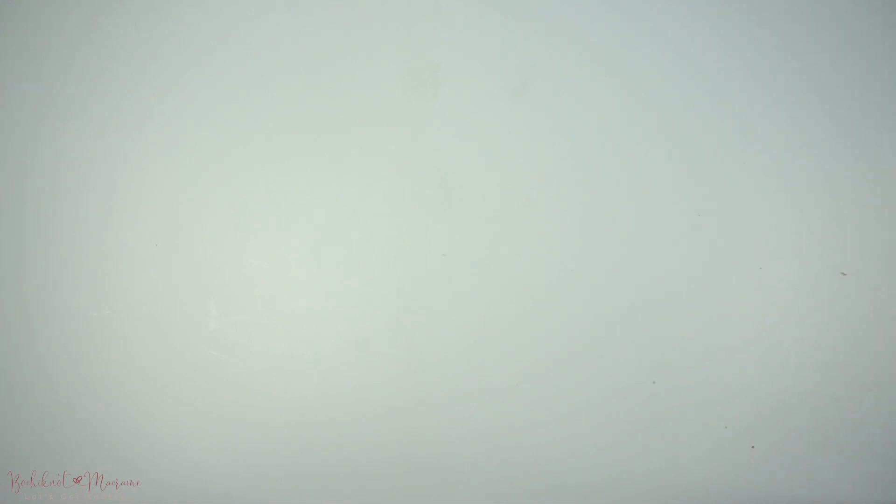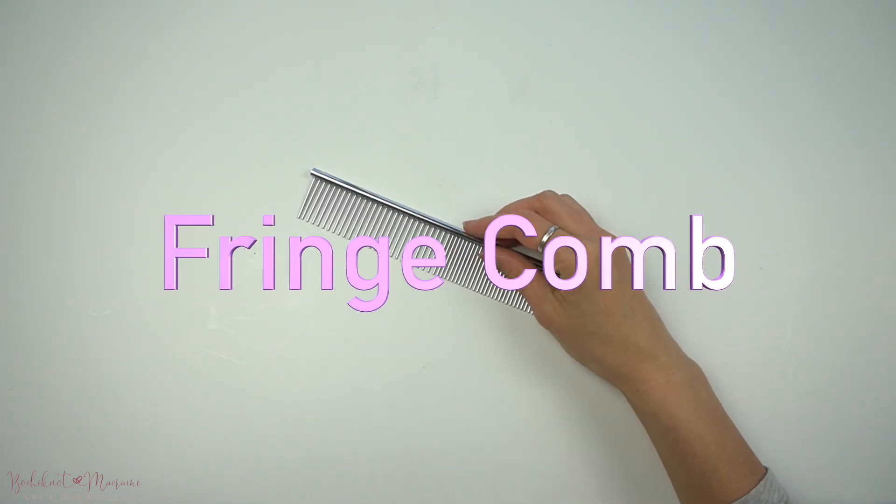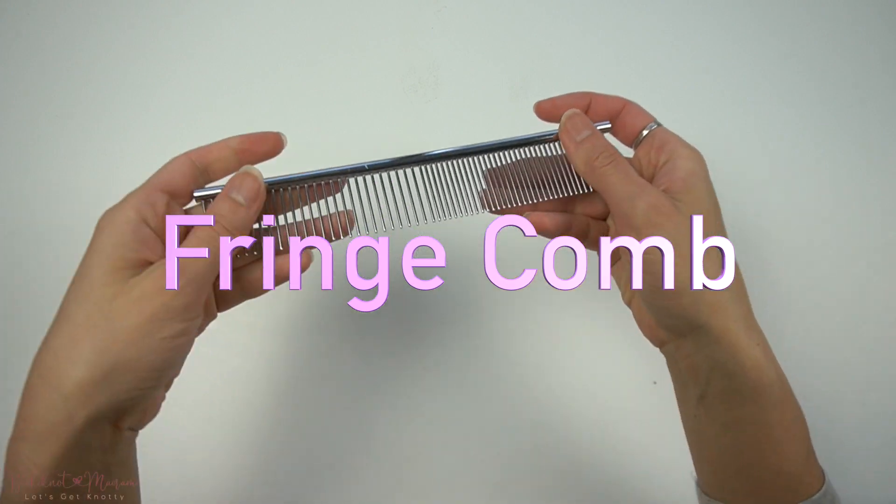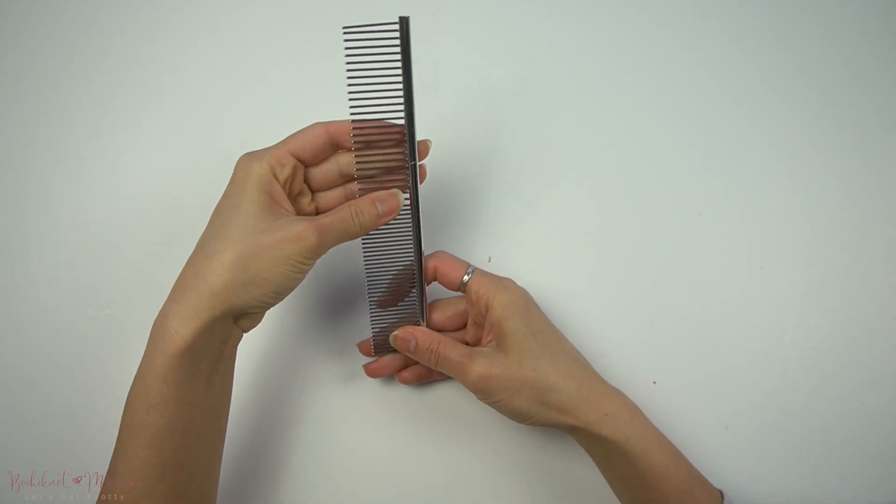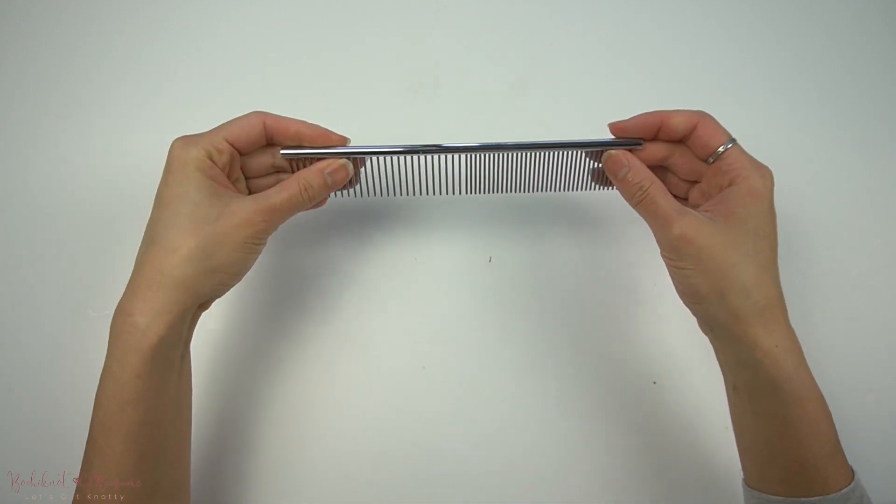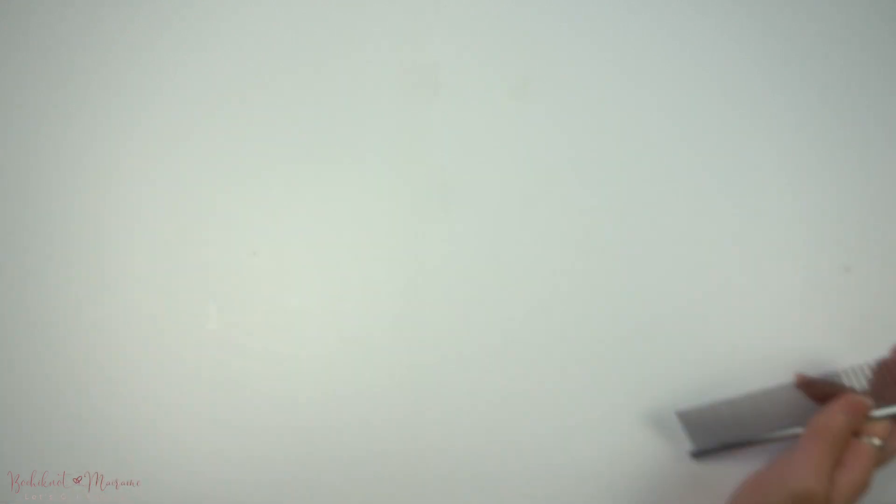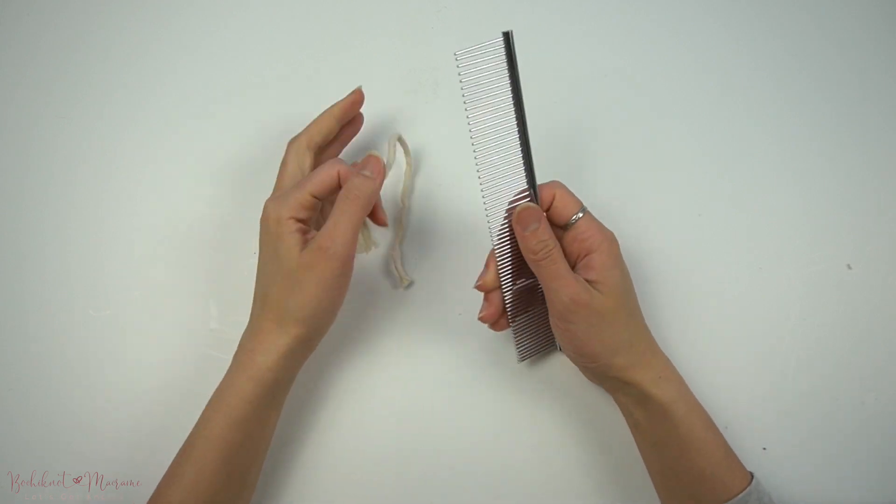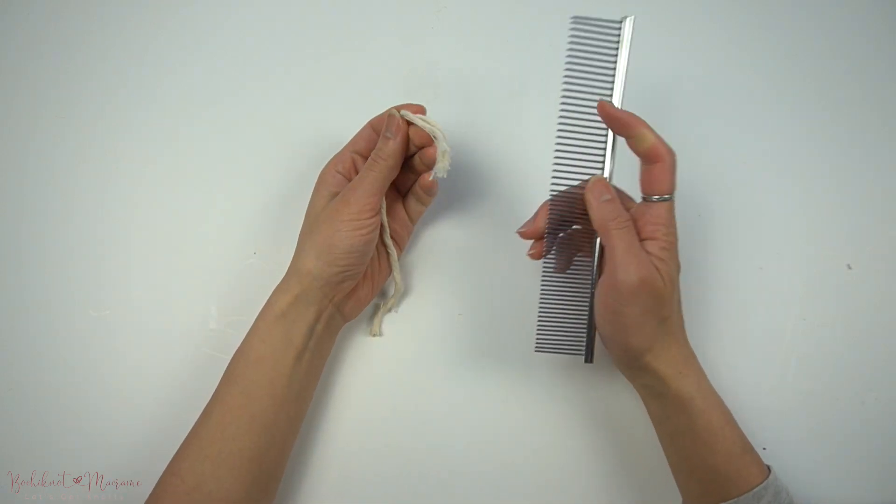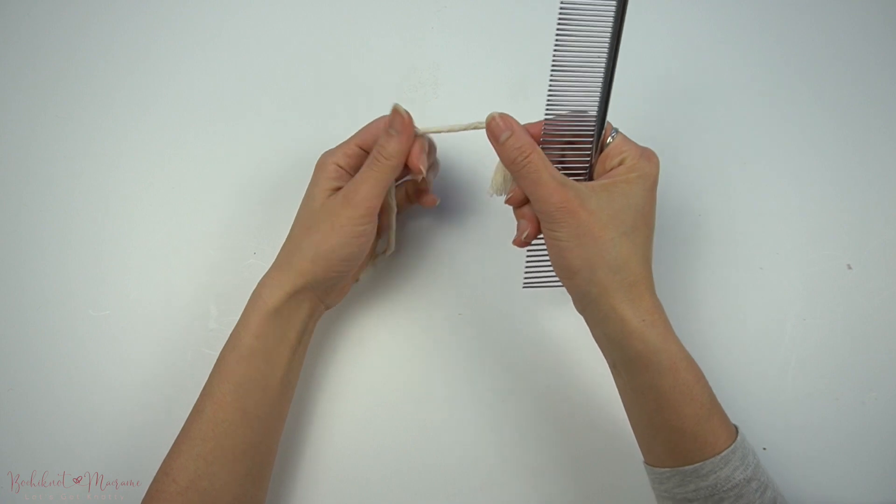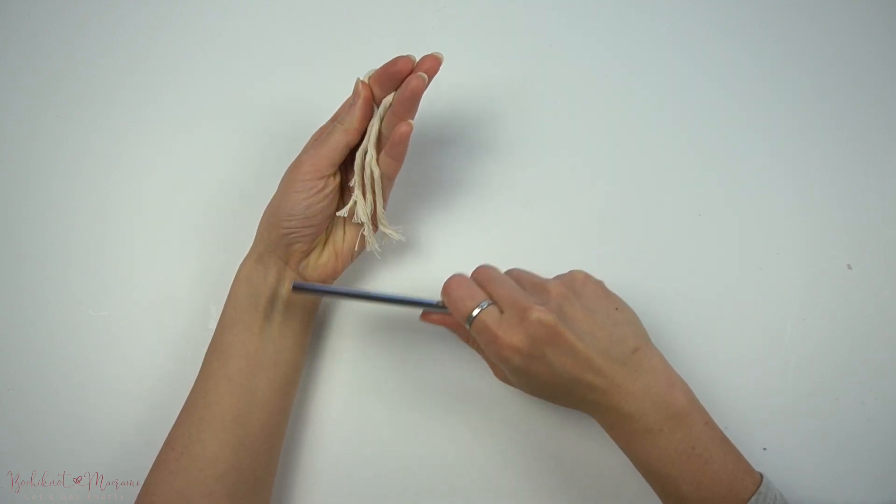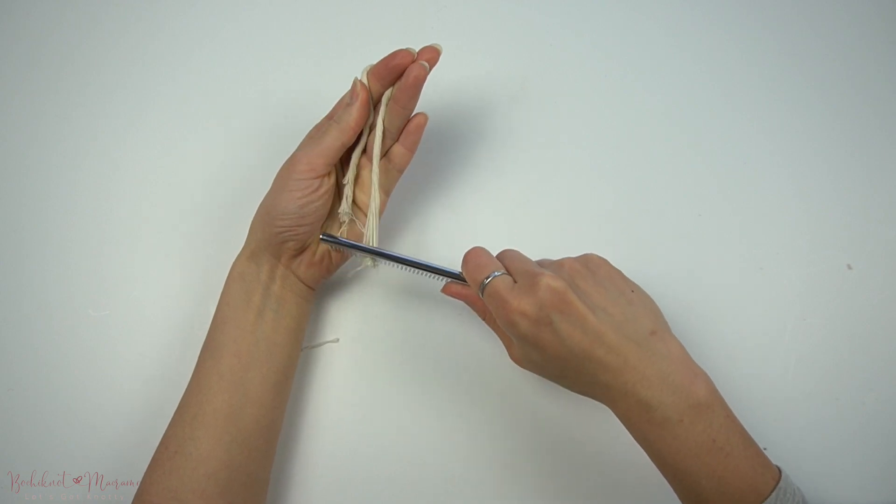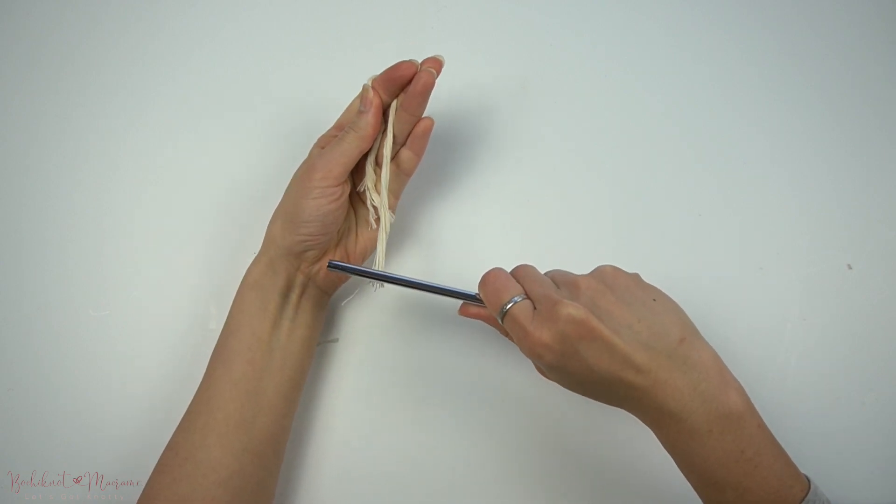A third important tool to have is a very nice fringe comb. This is probably my favorite tool to use for macramé since it is very durable and sturdy and it combs through fringe very easily, giving it a nice fluffy texture.